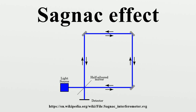This simplistic explanation breaks down in cases where the light is propagating through a medium which has a refractive index that is not 1. In that case, relativistic addition of velocities can be used to calculate the lab frame phase velocity of the light moving in the same direction as the rotation, as well as for the light moving in the opposite direction from the rotation. The difference in lab frame phase velocities determines the difference in travel times, and this difference in travel times can be multiplied by the optical frequency to determine a phase difference.